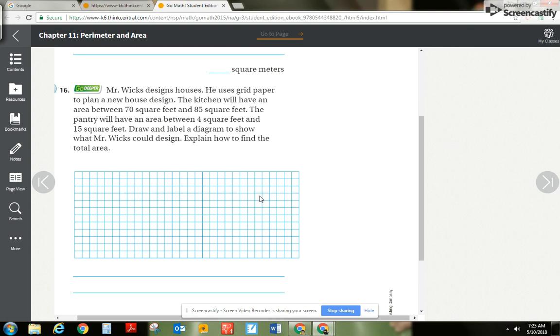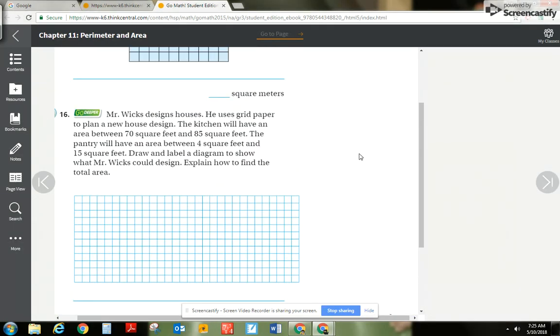Number 16 is our last problem and it's a go-deeper problem. This is going to be a tough story problem. Mr. Wicks designs houses, he's an architect. He uses grid paper to plan a new house design. The kitchen will have an area between 70 and 85 square feet. So when I count up his whole kitchen it's going to be between 70 and 85 feet squared. So that means it could be 70 square feet, 71, 72, 73, 74, blah blah blah, all the way up to 85 feet squared. So the inside is in a bit of a range here. The pantry will have an area between 4 square feet and 15 square feet. Draw and label a diagram to show what Mr. Wicks could design. Explain how to find the total area.